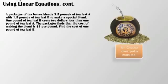A packager of tea leaves blends 3.5 pounds of tea leaf A with 1.5 pounds of tea leaf B to make a special blend. One pound of tea leaf B costs $2 less than one pound of tea leaf A. The packager finds that the cost of making the blend is $3 per pound. Find the cost of 1 pound of tea leaf B.